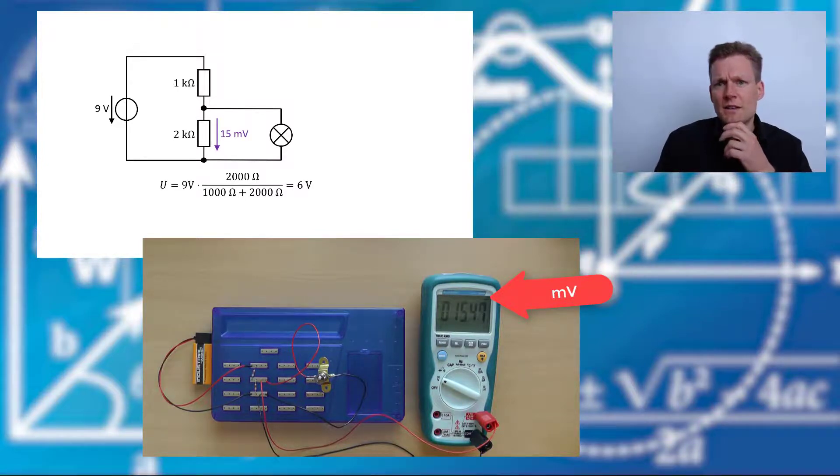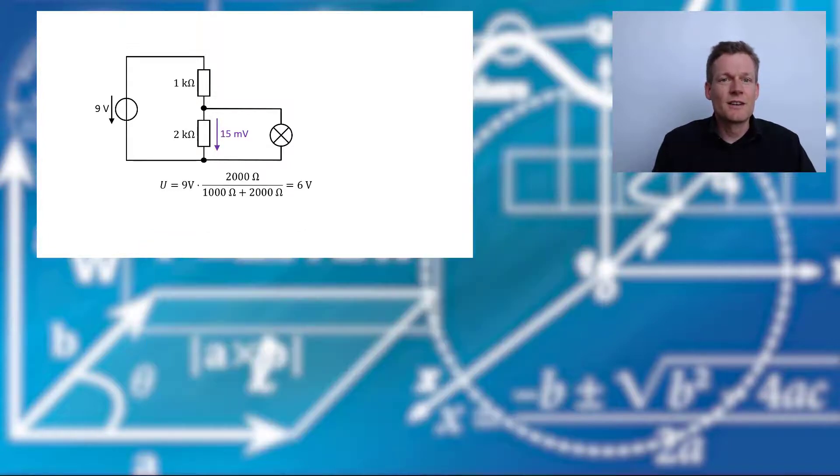Why is that? You remember the loaded voltage divider. We have to take into account the parallel connection of our 2 kOhm resistor and our lamp. And the lamp has about 1.7 Ohm.